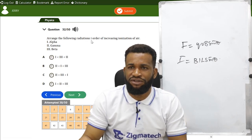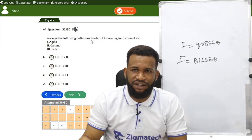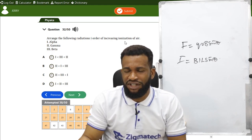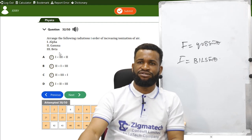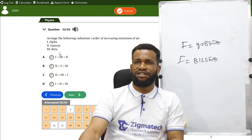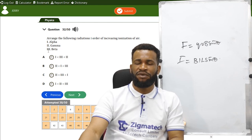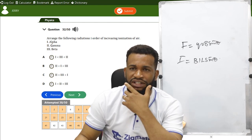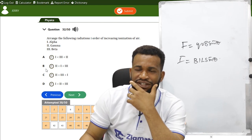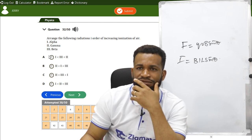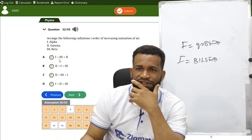Arrange the following radiations in order of increasing ionization. Alpha has the highest ionizing power, followed by beta, and gamma has the least. In increasing order: gamma (2), beta (3), alpha. Option C is correct.